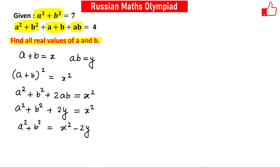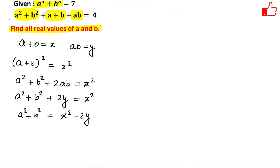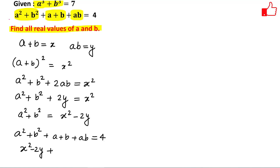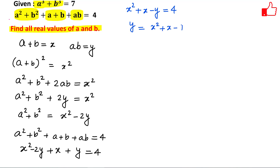We plug a²+b²=x²−2y into the second equation a²+b²+ab+a+b=4. Substituting: (x²−2y)+y+x=4, which simplifies to x²+x−y=4, or equivalently y=x²+x−4. Let's call this Equation 1.